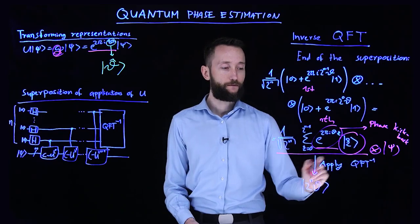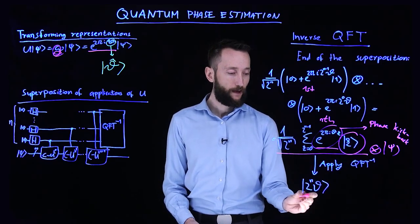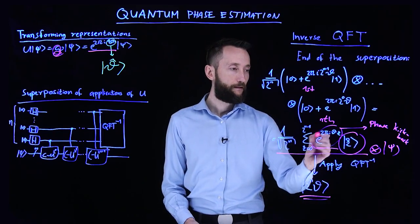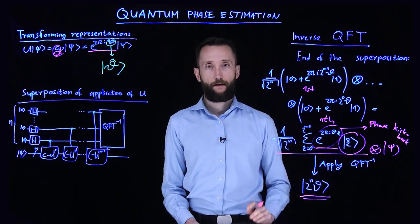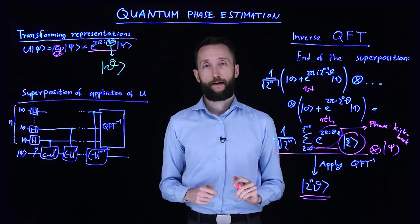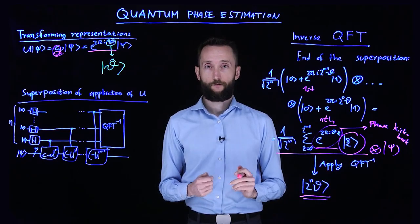By applying the inverse quantum Fourier transformation, we can write this global phase back into the register, thereby estimating the eigenvalue we are interested in.